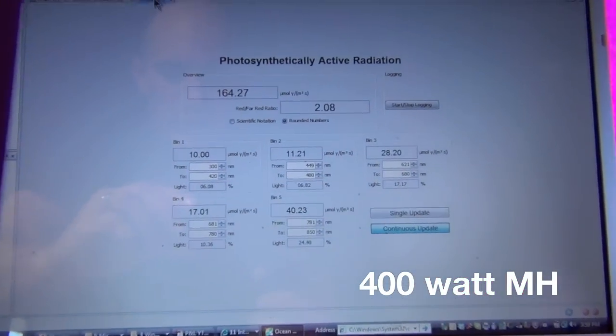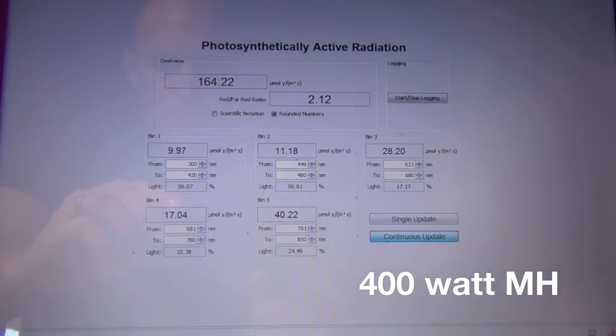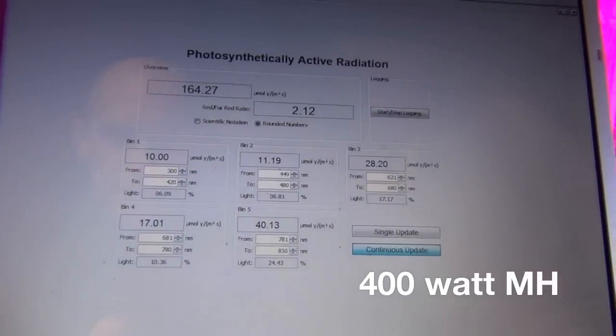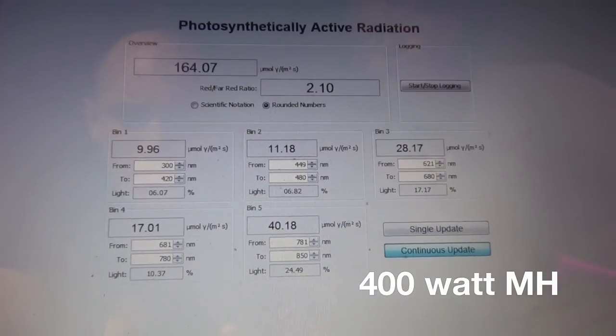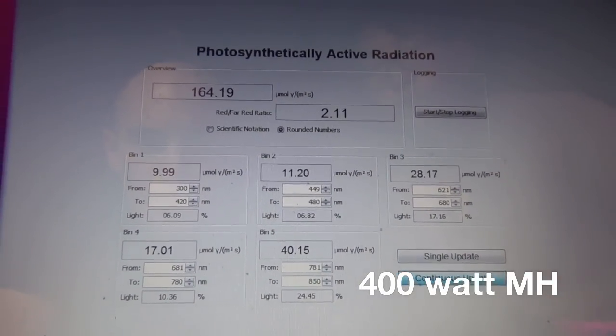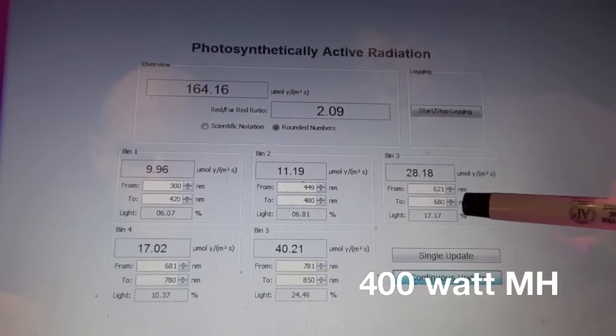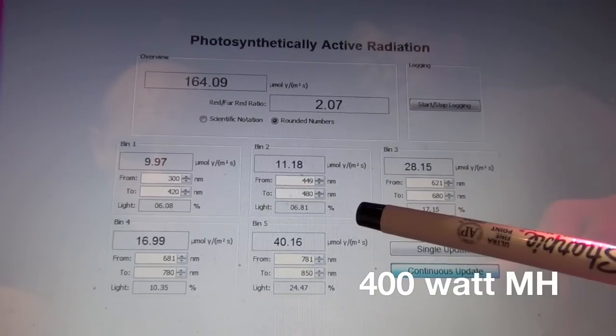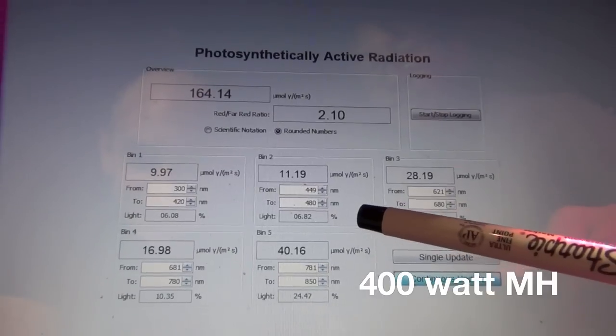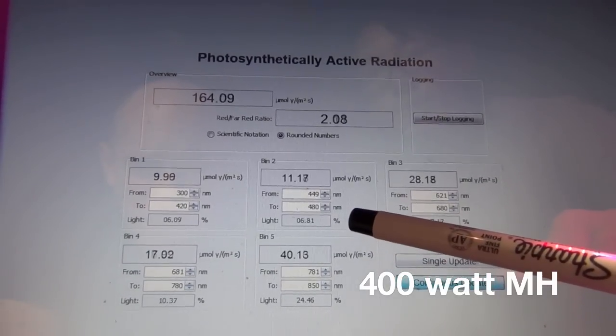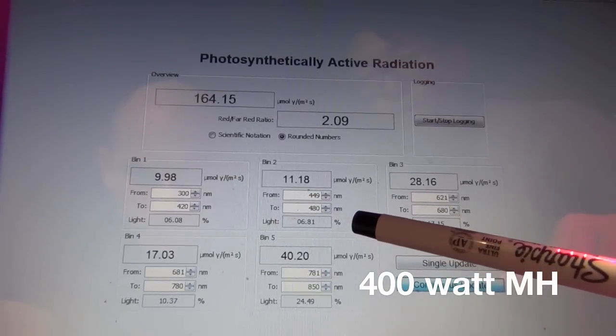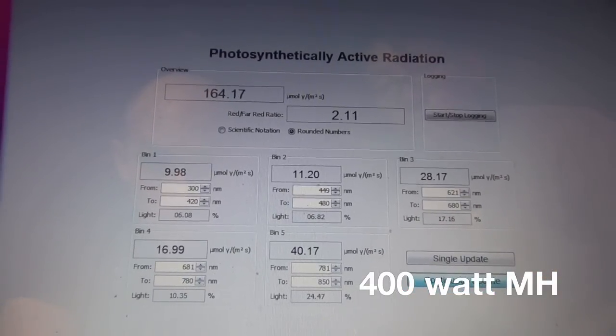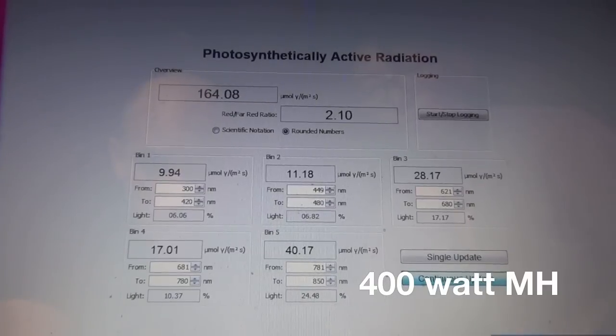Before we were looking at the Lumigro 330. Do you mind explaining the bins again? Each bin represents a different wavelength region. We're looking at bin 2 and bin 3. Bin 2 is the blue, and these numbers are a lot lower than before. We're getting about 11.2 micromoles of blue between 450 and 480 nanometers.